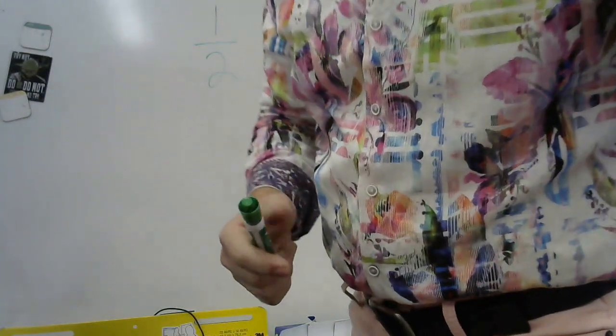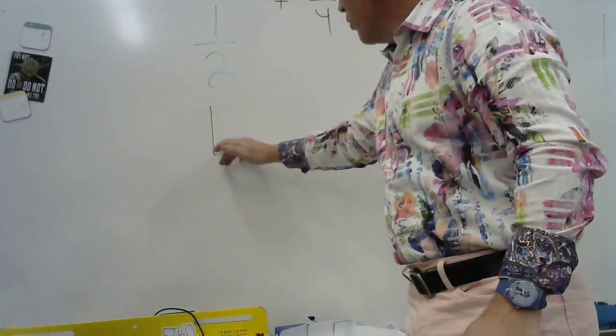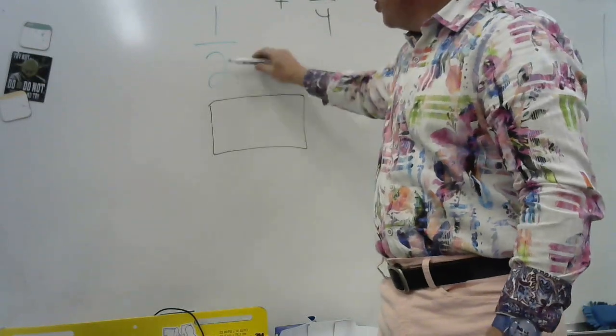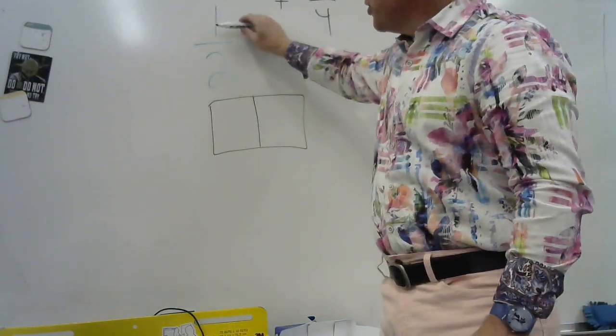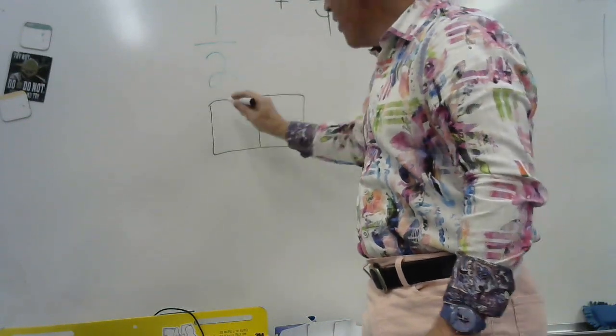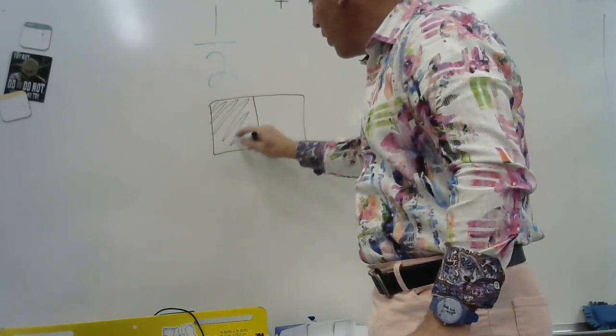So when Emily did it, what she did is she drew a bar model and she knew that the whole was cut up into two pieces. Now the top number shows how many of those pieces I have. That's why she colored that one in.